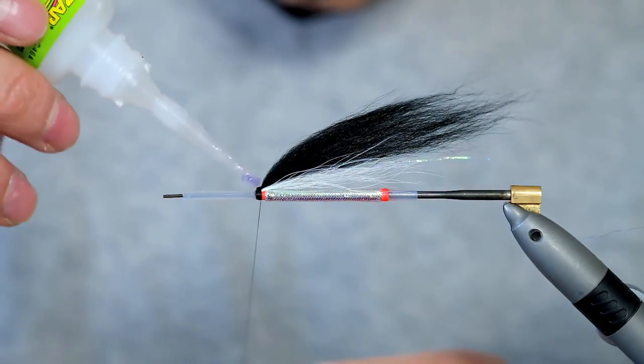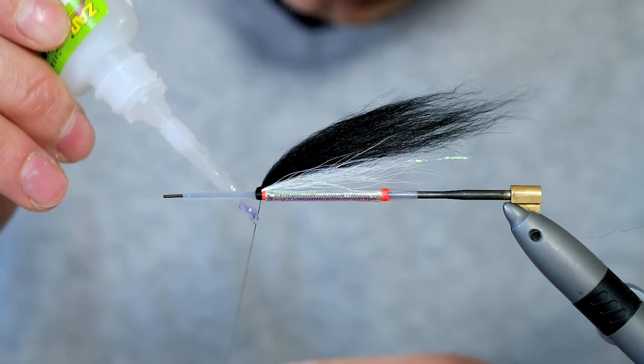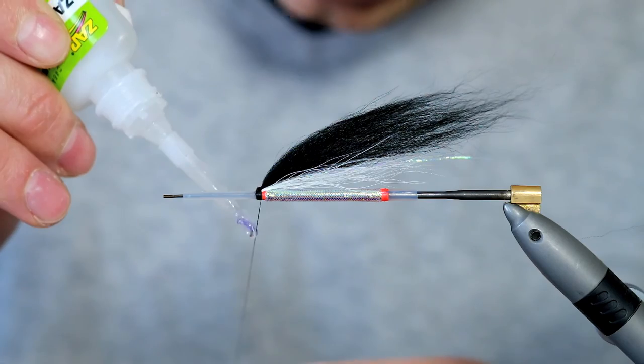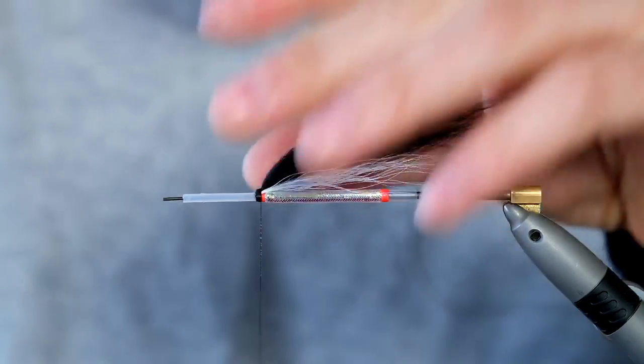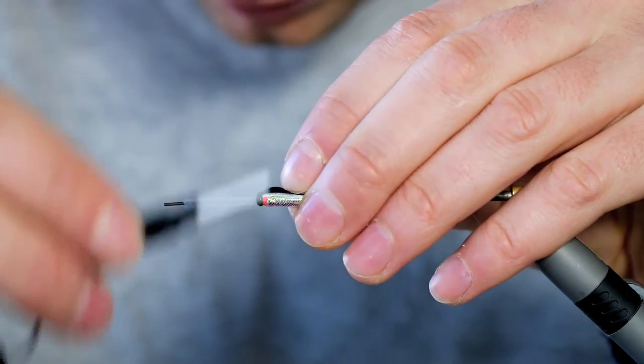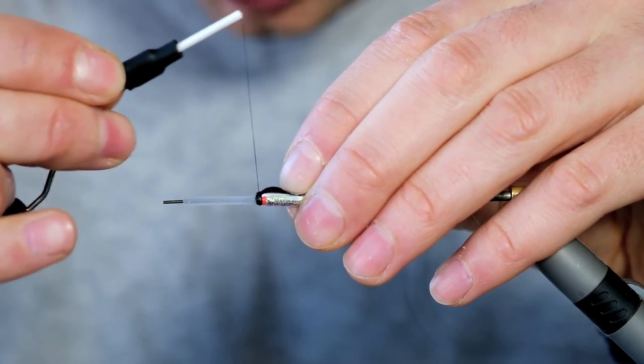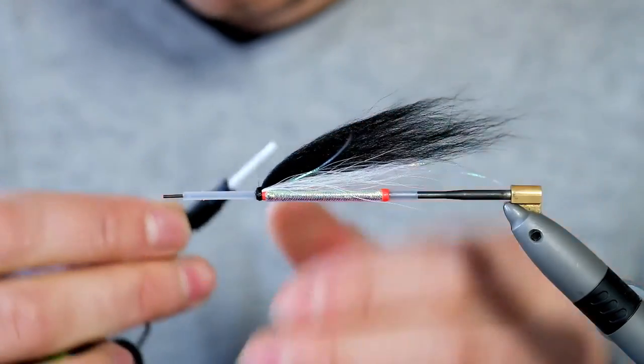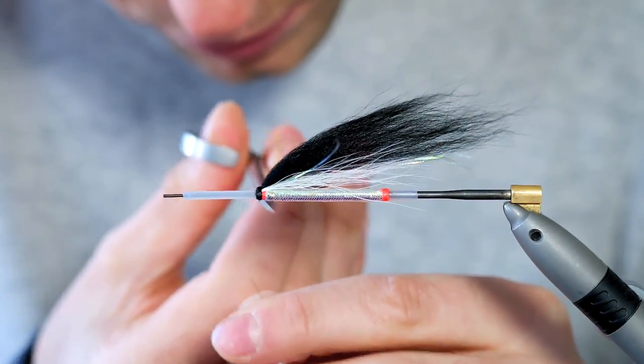And what you could do is put a little bit of zappy gap on your thread. Actually the brush applicator works really nice for this. A couple of turns, really pull it in, cut off.